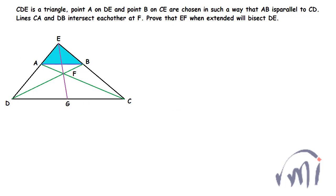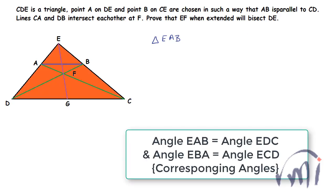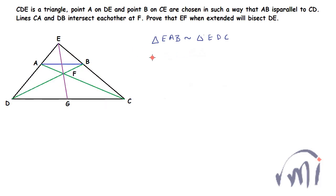See here, triangle EAB is similar to triangle EDC. So if these two triangles are similar, that means the ratio of their respective sides will also be the same.